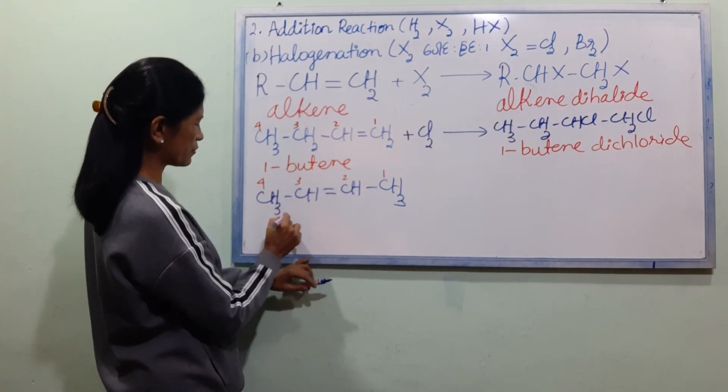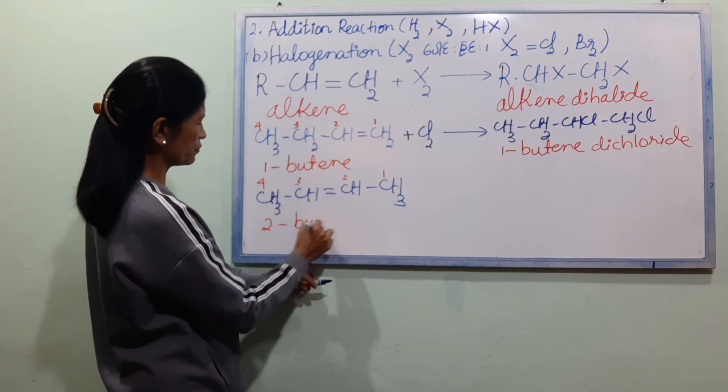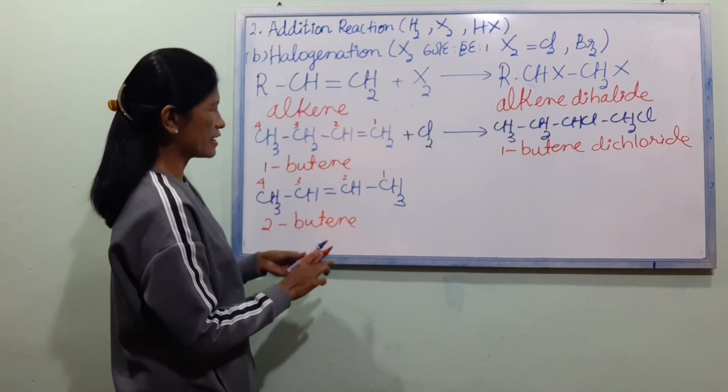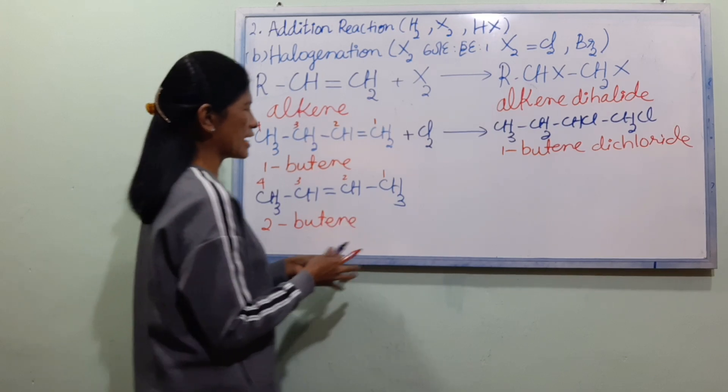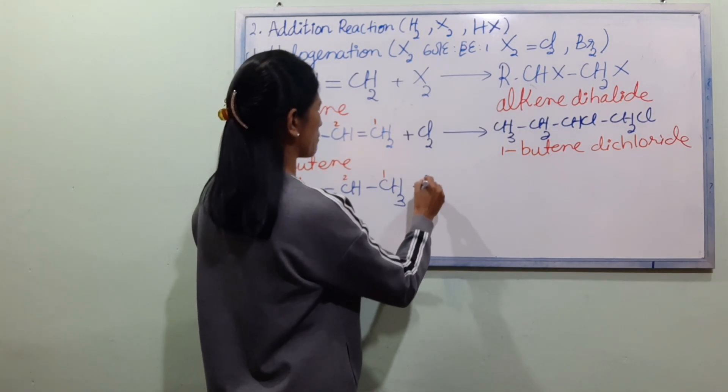If we have one and one — one, two, three, four. Now we have 1,2-dichloride — D, I, N, E, W, T. If we can use this, we can do two things.